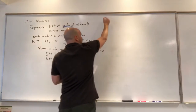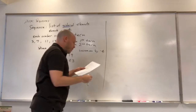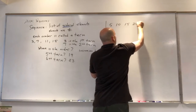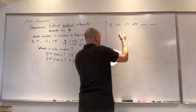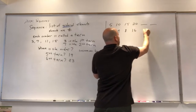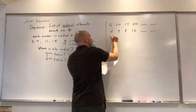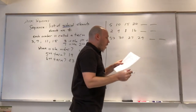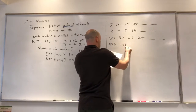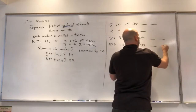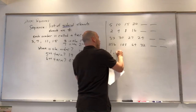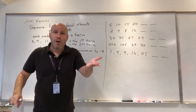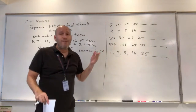I'd like you to figure these out. I'm going to give you some sequences and I want you to write down the next two terms. First sequence: 5, 10, 15, 20 — find the next two terms. Second: 2, 4, 8, 16 — find the next two terms. Third: 30, 33, 30, 27, 24 — find the next two terms. Pause the video and figure it out.